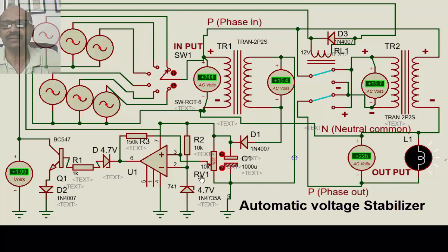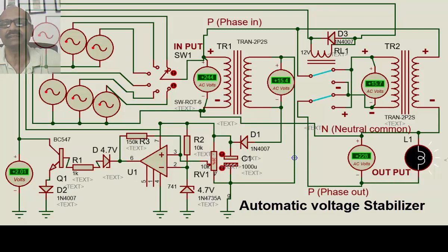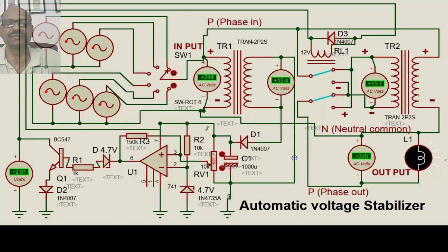The preset resistor is adjusted only once — at the time of manufacturing. Every stabilizer has this variable resistor which is set then, and after that you don't have to disturb it. This ensures the stabilizer operates exactly the way it is designed to.